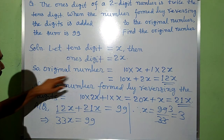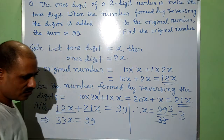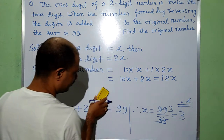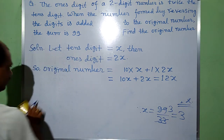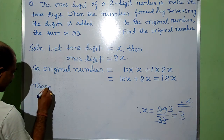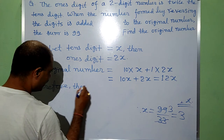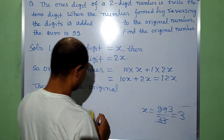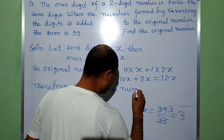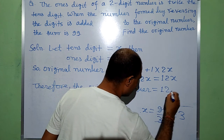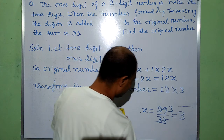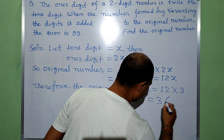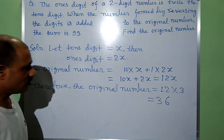Find the original number. The original number is 12x, which equals 12 times 3, that is equal to 36. So the original number is 36.